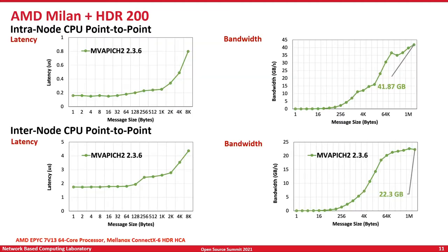Here are some numbers from the latest AMD Milan system together with InfiniBand HDR-200. For intra-node latency, we are able to deliver between process-to-process within the same socket almost 190 nanoseconds. For intra-node bandwidth, we deliver around 41.87 gigabytes per second. For inter-node on InfiniBand HDR-200 on AMD Milan, we achieve around 1.9 microseconds half round-trip point-to-point latency, and we come very close to the peak bandwidth of 22.3 gigabytes per second.